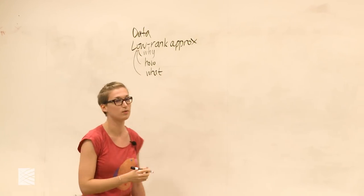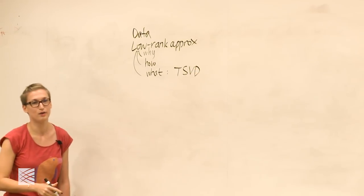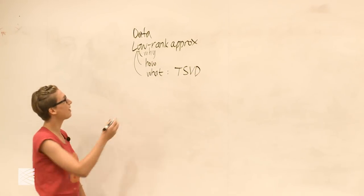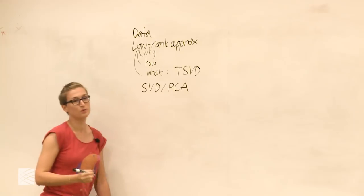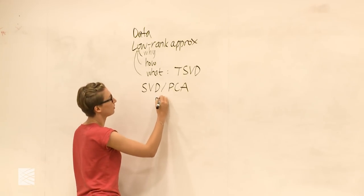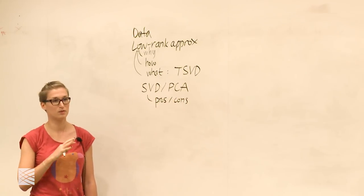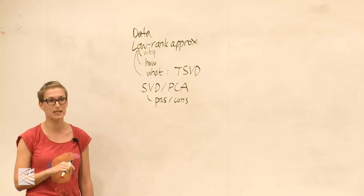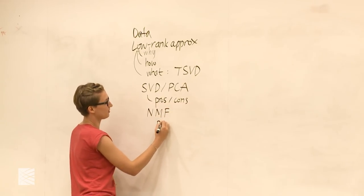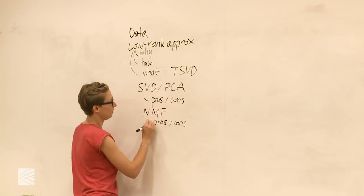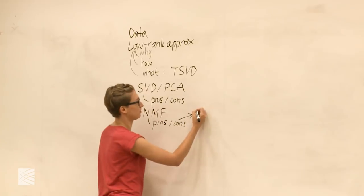The answer to what — or kind of who — is going to turn out to be truncated singular value decomposition. To understand what that means, we're going to take a deep dive and actually introduce singular value decomposition in PCA. We'll discuss the pros and cons, and the cons are going to motivate us to introduce an alternative low-rank approximation technique called NMF, non-negative matrix factorization.